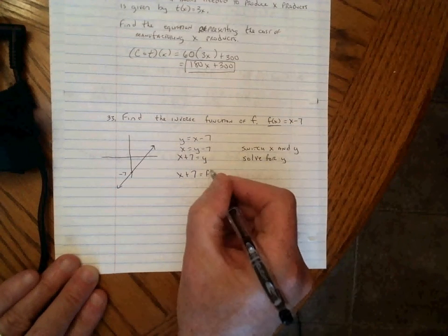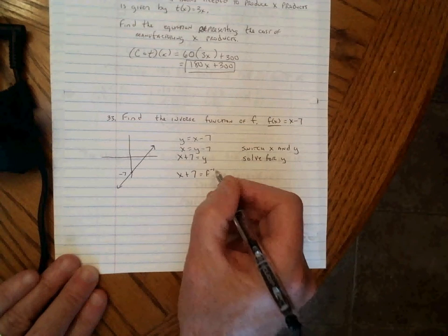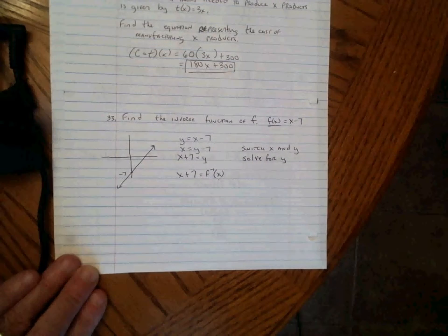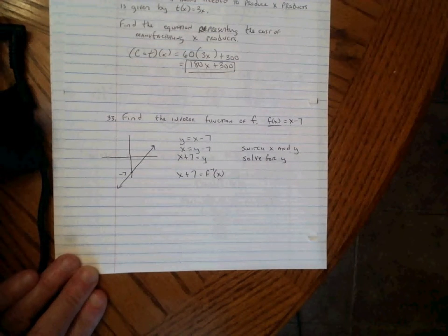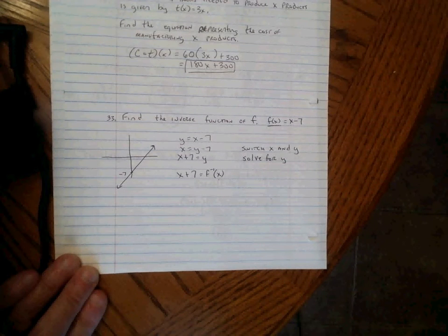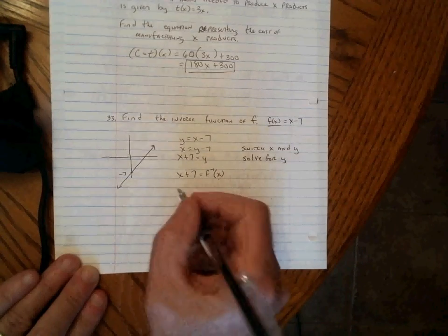And we write F inverse. It looks like raised to a power, but it's not. It just means F inverse. F with a negative 1 looking like an exponent means F inverse of X. So the answer to 33 is F inverse of X equals X plus 7. I believe that answer is A. That answer is A.